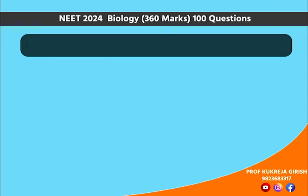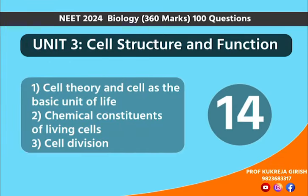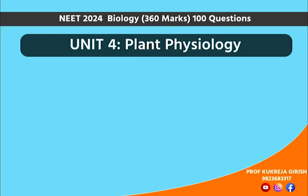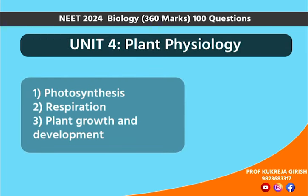Unit 3, the unit of cell — 14 questions. Unit 4, plant physiology — around 7 questions.